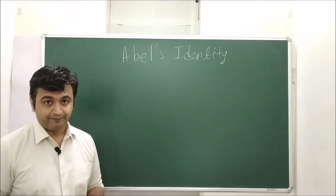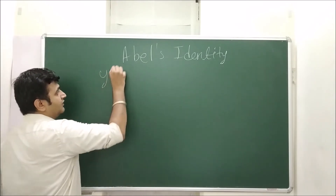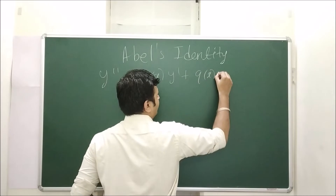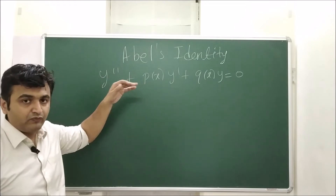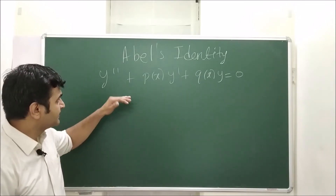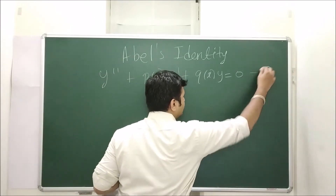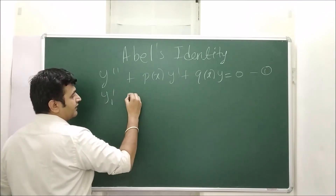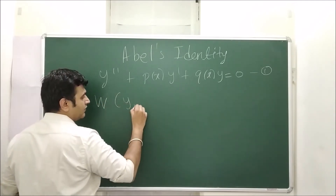I will explain with the help of an example later on, but first let us derive the formula. I'll be concentrating on the second-order homogeneous linear differential equation with continuous coefficients. There is a very general proof for nth order as well as for systems of differential equations, but that's quite complicated, so let me stick to this. Let y1 and y2 be solutions of this equation.